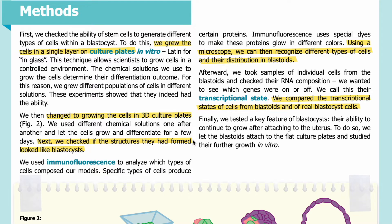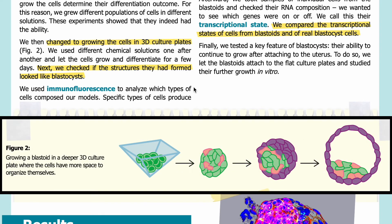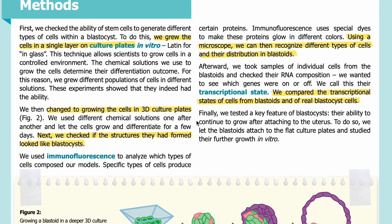Next, we checked if the structures they had formed looked like blastocysts. Figure 2 models growing a blastoid in a deeper 3D culture plate where the cells have more space to organize themselves — the 3D culture plate here looks like an inverted pyramid. The steps shown from left to right show the same progression of cell division and differentiation as the photos in Figure 1. The different colors represent cells that have differentiated to eventually perform different jobs. We used immunofluorescence to analyze which types of cells composed our models.